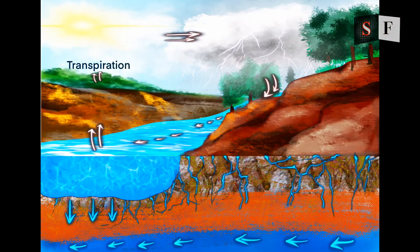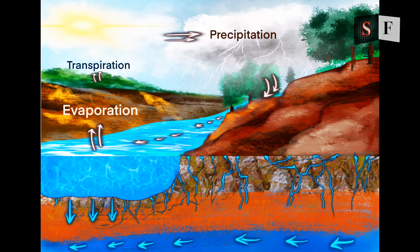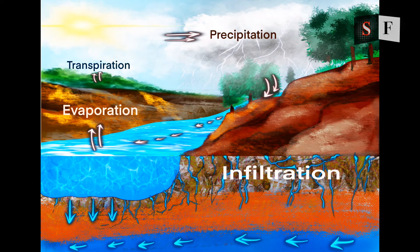When water vaporizes from the leaves, that process is called transpiration. When water vaporizes from the ocean surface, lakes, and ponds, it is called evaporation. When water forms from clouds, it is called condensation. When water falls from the clouds onto the surface of the earth as rain, that is called precipitation. When water flows from a higher stream to a lower stream onto the ocean surface, it is called runoff. When water from the ground surface enters underground, that is called infiltration. This process repeats itself forming a cycle known as the hydrological cycle, or simply the water cycle.